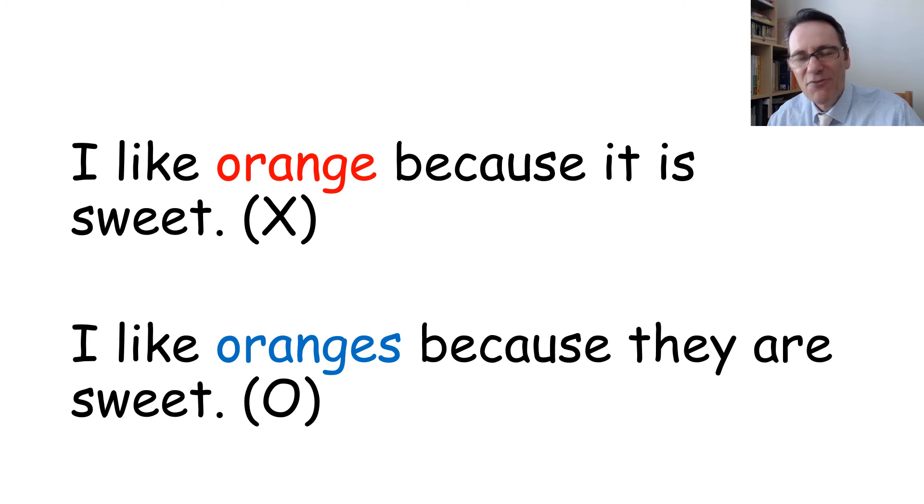We must make every non-countable noun a plural in these situations where we're talking about what we like and don't like. So, I like apples. I like pears. I like bananas.